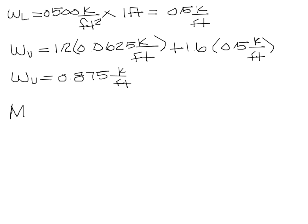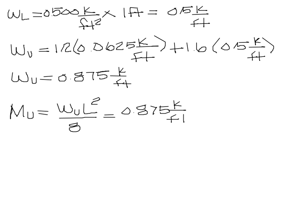Since it's a distributed load, the moment for bending is W sub U times L squared divided by 8. So 0.875 times 10 feet squared, divided by 8, gives a design moment of 10.9 kip-feet. Always make sure you're using the correct span when two dimensions are given.